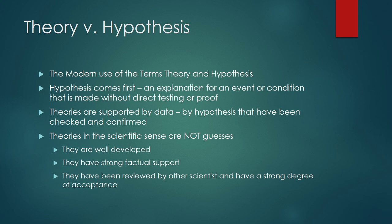So, theory versus hypothesis — how do we use them? A hypothesis comes first. This is where you come up with an explanation for an event or condition, and you don't have direct test or proof yet. So you might be doing an aircraft investigation and say, 'My hypothesis is pilot error,' because a large majority of airplane crashes are because the pilot made a mistake. You don't have any proof of this — you just have a hypothesis. It might turn out to be true, or it might not.